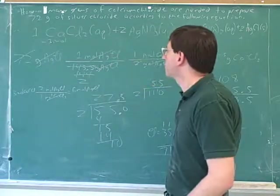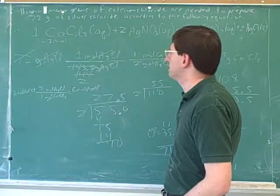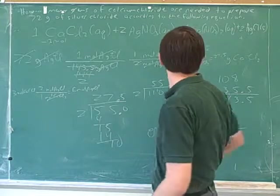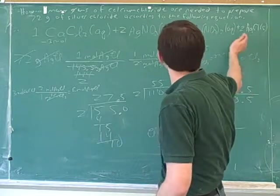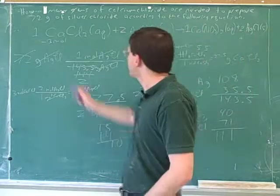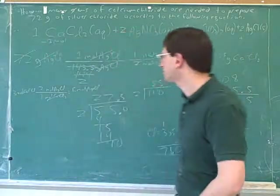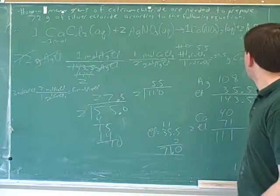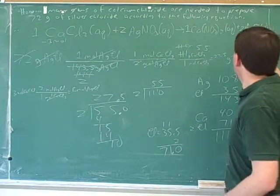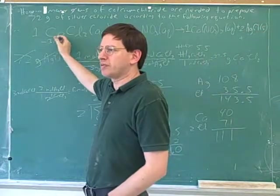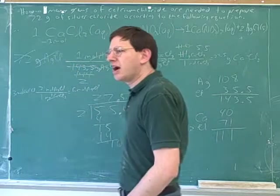With practice, hopefully we can just eyeball this and see that the coefficients tell us we're making twice as much silver chloride as we use up of calcium chloride. So we're going to make twice as many moles of silver chloride as we're using up of calcium chloride.